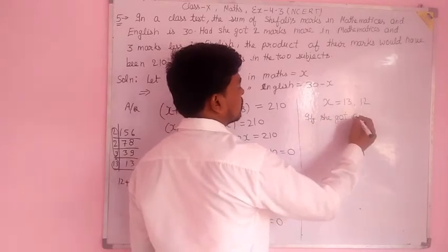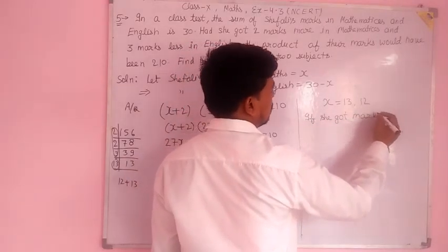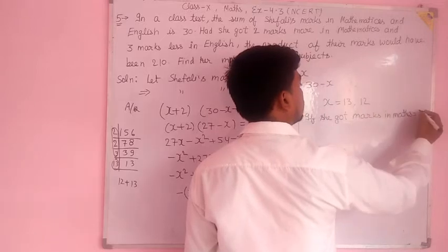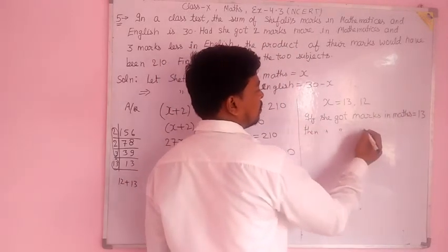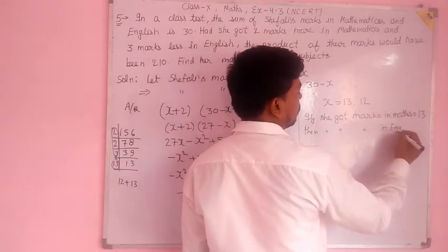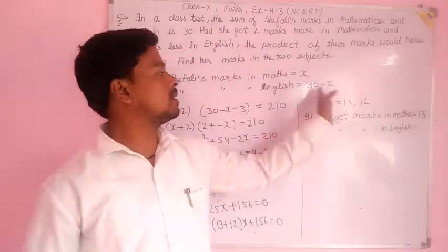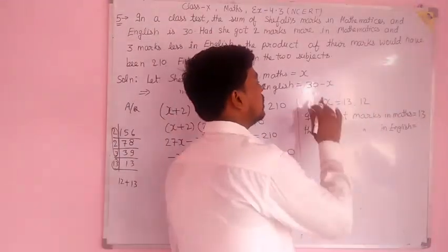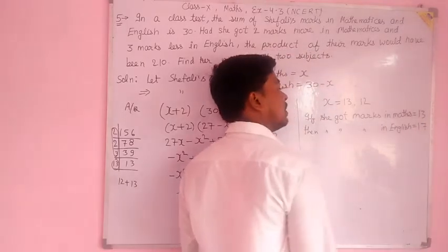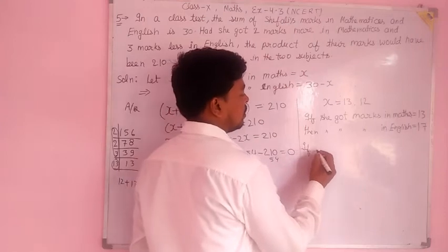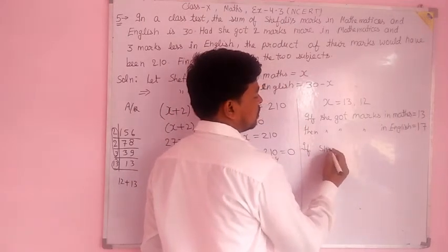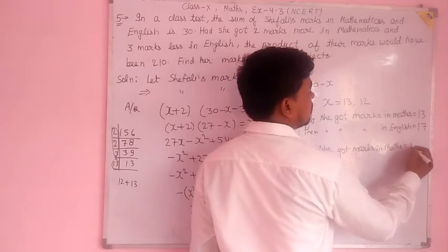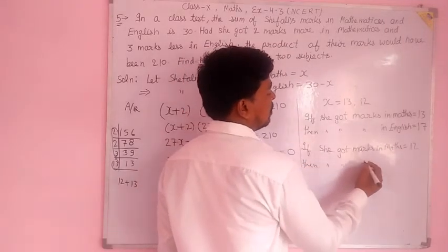If Cephali's marks in maths are 13, then Cephali's marks in English would be 30 minus 13 equals 17. If Cephali's marks in maths are 12, then Cephali's marks in English would be 30 minus 12 equals 18.